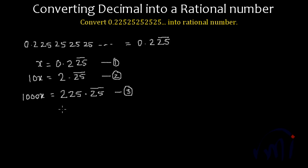And now if I do equation number 3 minus 2, 1000x minus 10x will give us 990x and this will be equal to 225.25 minus 2.25 where this 0.25s are repeating themselves infinite times.